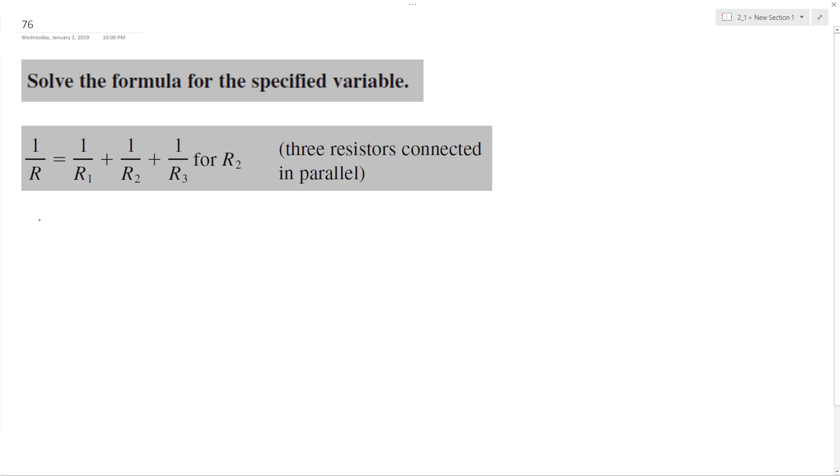We're going to have 1 over R2 equals 1 over R minus 1 over R1 minus 1 over R3. The common denominator on the right side is R R1